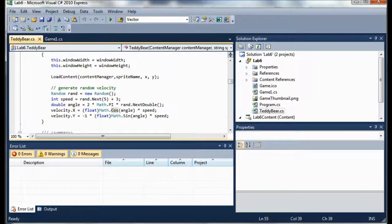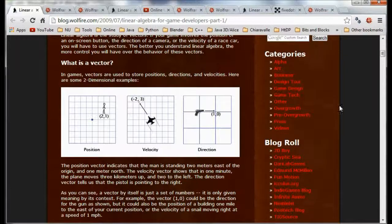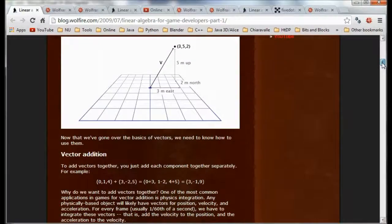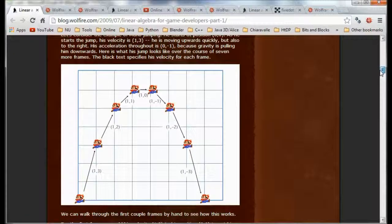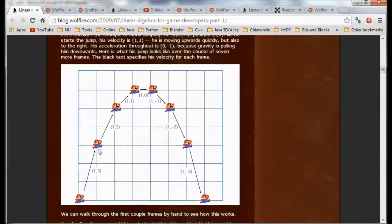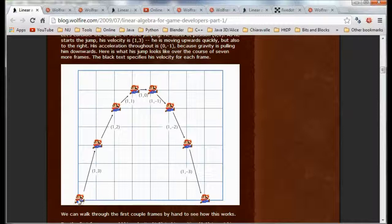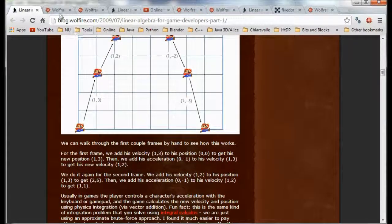Later on, there's a nice discussion about vector addition. Here we have a grid and Mario is jumping. At this stage of the jump, Mario is going one this way and three this way, so it's a (1,3) vector. Here he's going (1,2). It's really the addition of these different vectors. Here we have a negative y component for these vectors when he's coming down.